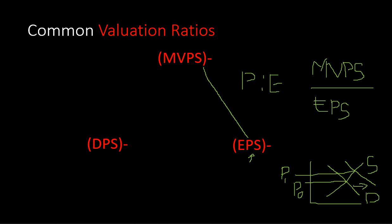Now if you use dividends as the basis for the value of a stock, it has the same effect — the higher the dividends per share, the higher the demand for the stock, which results in a higher price. Putting that together gives us the Dividend Yield. The formula for dividend yield is: dividends per share divided by the market value per share.